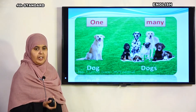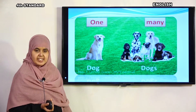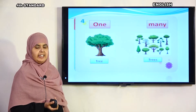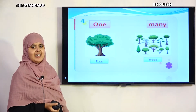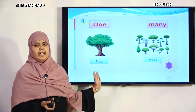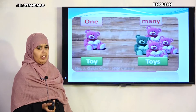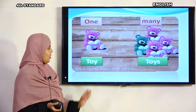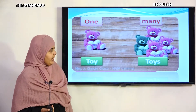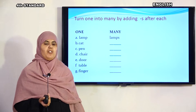Dog — one dog is singular. Dogs — many, we add 's'. One tree and many trees — we add 's'. One toy — khilona; many toys — khilone. We add 's' to make it plural. So: turn one into many by adding 's' after each word.